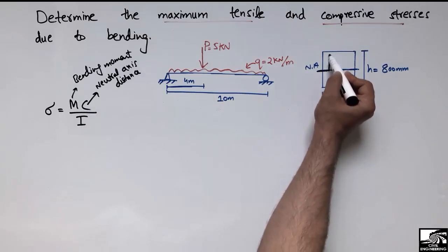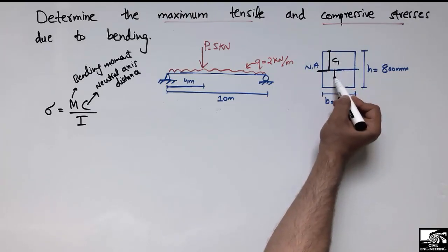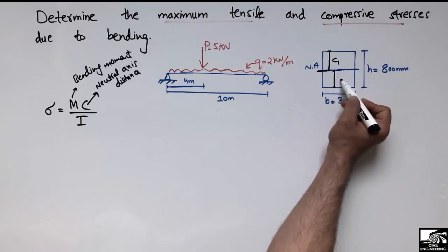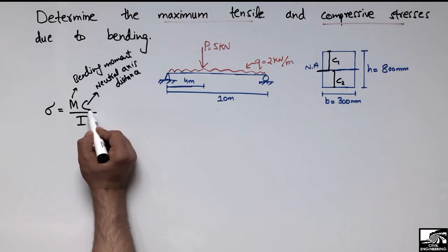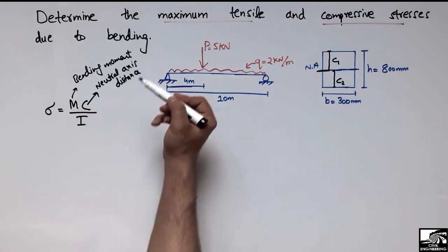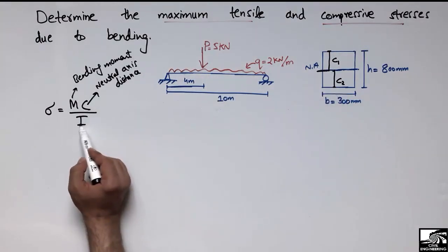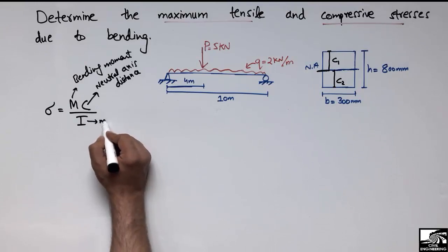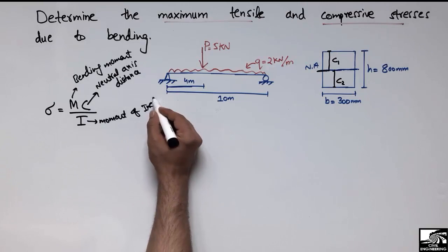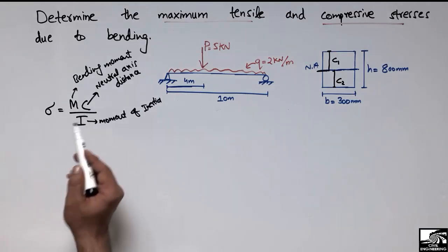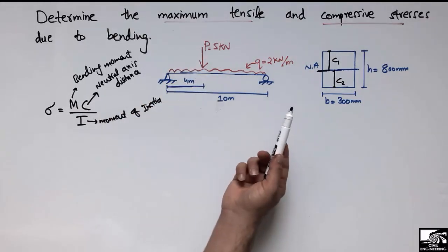The distance c is always measured from the neutral axis — from the center of the beam. From the neutral axis to the top of the beam we call it c1, and from the neutral axis to the extreme bottom of the beam we call it c2. This represents the distance from the neutral axis to the extreme fiber, either top or bottom. I is the moment of inertia of the beam.